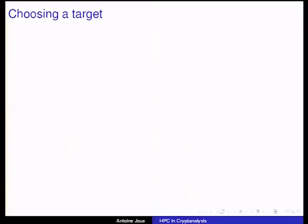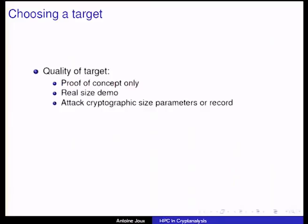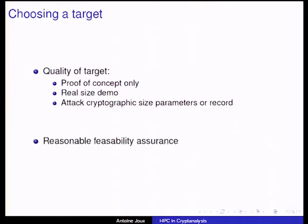Assuming you have your computing power, you choose a target compatible with it. It can be a proof of concept, a real-size demonstration, or ideally an attack on cryptographic-size parameters or a new record — though you can't always do that. When you choose your target, you should be reasonably sure that you're not going to work for four to six months and get nothing at the end.